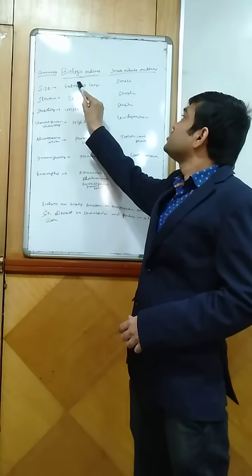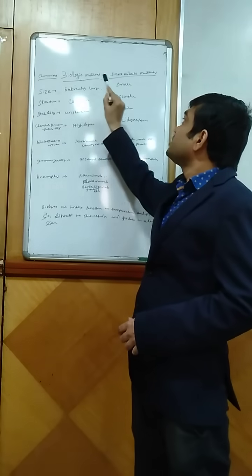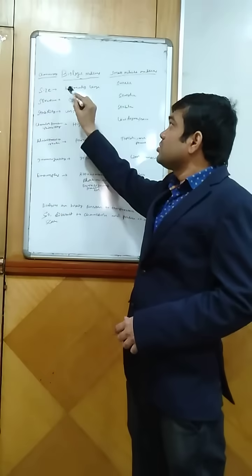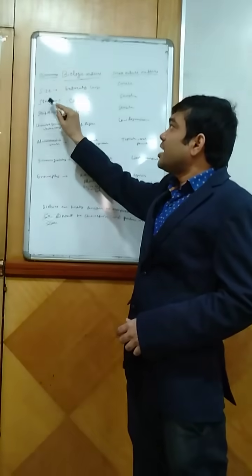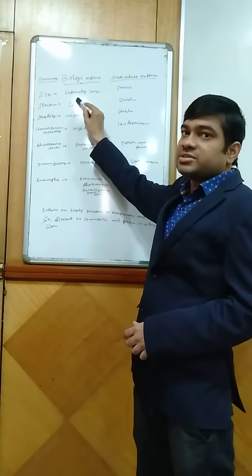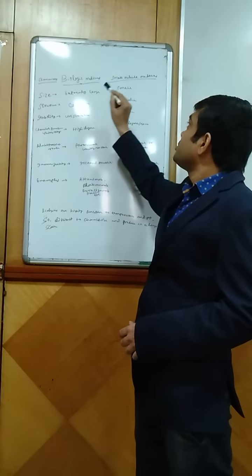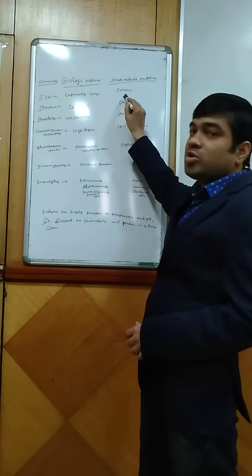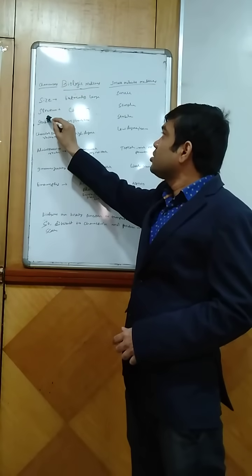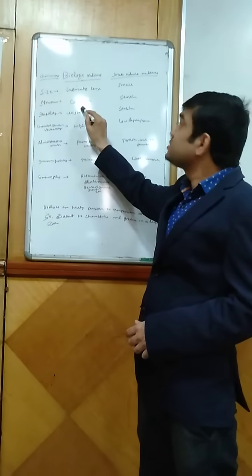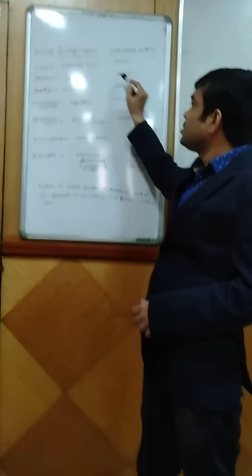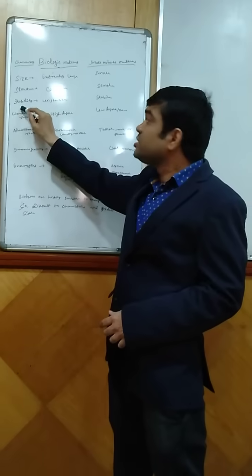What is Biologic Medicines and what is the difference between Biologics and Small Molecules? According to size, Biologics are extremely large molecules but Small Molecules are very small in size. The structure of Biologics is very complex and the structure of Small Molecules is simple.